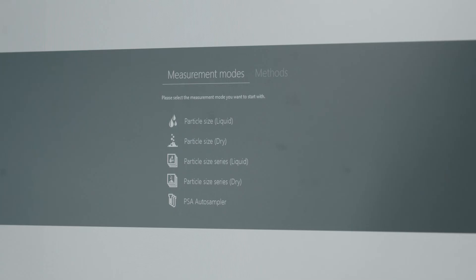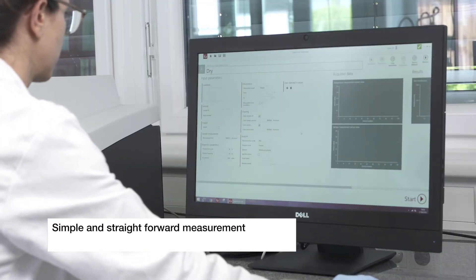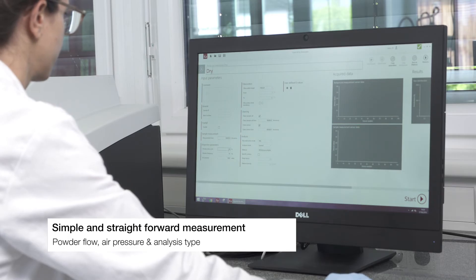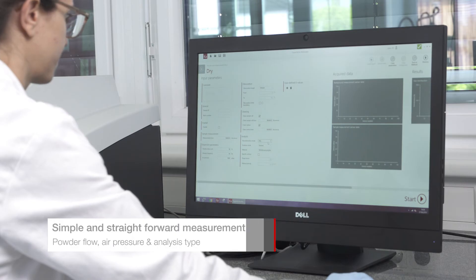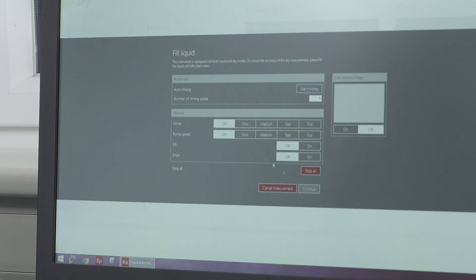Again, the measurement is set by choosing the basic parameters in the Calliope software. Those parameters include dispersion settings like powder flow and air pressure, analysis choice, and others. All of those settings and more are on the same screen, allowing for an easy setup.